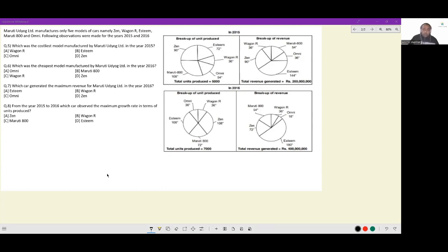First question: which was the costliest model manufactured by Maruti Udyog Ltd in 2015? So, can I say if I'm looking for the costliest model, I'm looking for per unit selling price. Per unit selling price will be given by revenue of a car divided by units produced of a car.